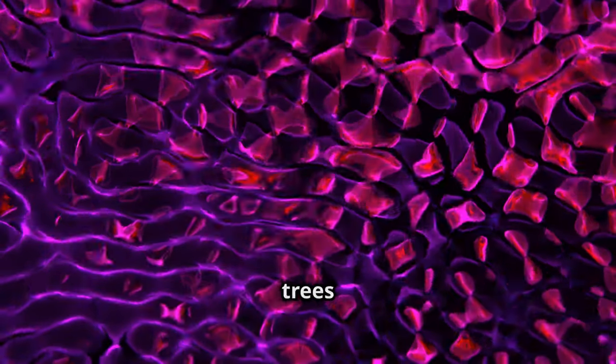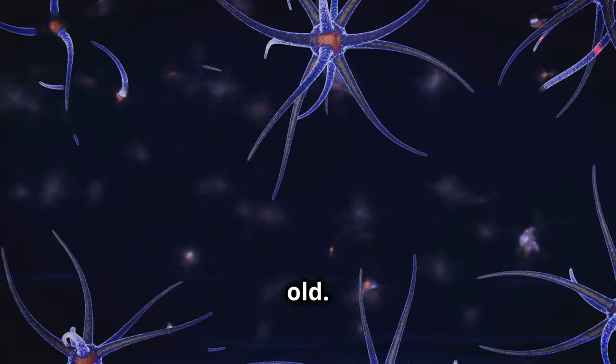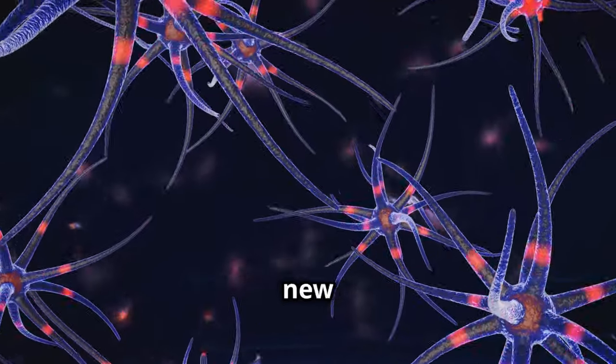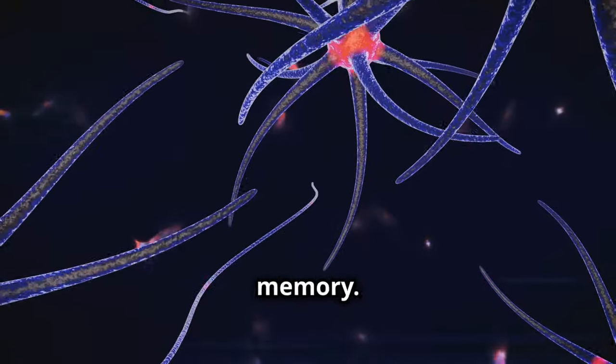Imagine a forest where new trees can sprout, grow, and flourish alongside the old. Similarly, neurogenesis allows our brains to constantly generate new neurons, particularly in a region called the hippocampus, which is crucial for learning and memory.